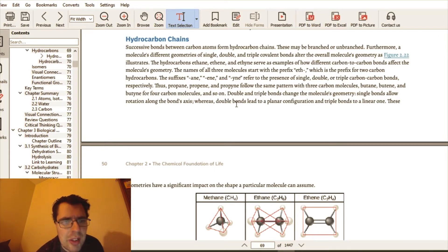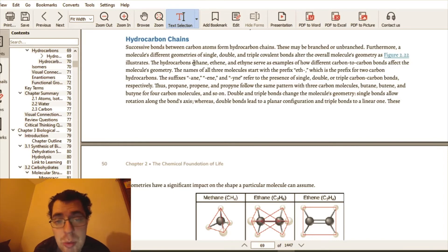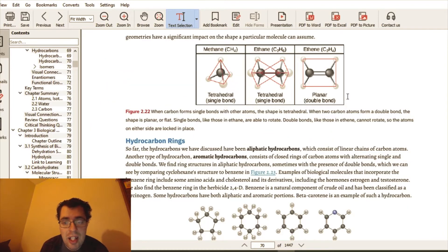Revolving around hydrocarbon chains, successive bonds between carbon atoms form hydrocarbon chains. These may be branched or unbranched. Methane is one carbon surrounded by four different hydrogens. Ethane is when a carbon is surrounded by three hydrogens and another carbon, which itself is surrounded by three hydrogens.